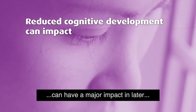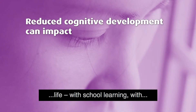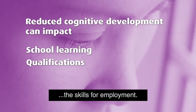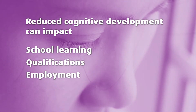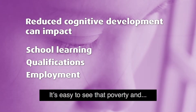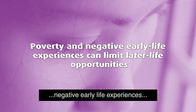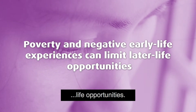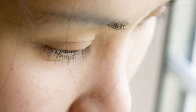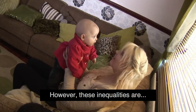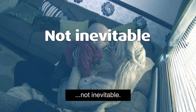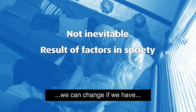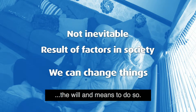Reduced cognitive development can have a major impact in later life with school learning, with qualifications and with acquiring the skills for employment. It's easy to see that poverty and negative early life experiences can severely limit later life opportunities. However, these inequalities are not inevitable — they are the result of factors in society, factors which we can change if we have the will and means to do so.